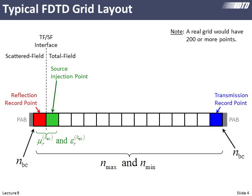So after the source is launched we will record the fields at the first cell and the last cell in our grid. The first cell will be our reflection record point, the last one will be our transmission record point, and we will Fourier transform those at any frequency we're interested in and then plot transmission and reflection as a function of frequency.